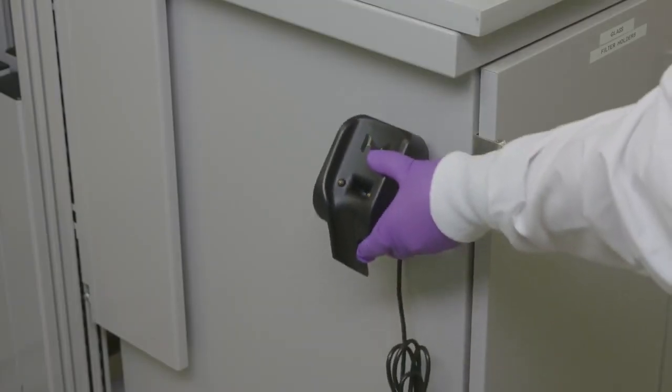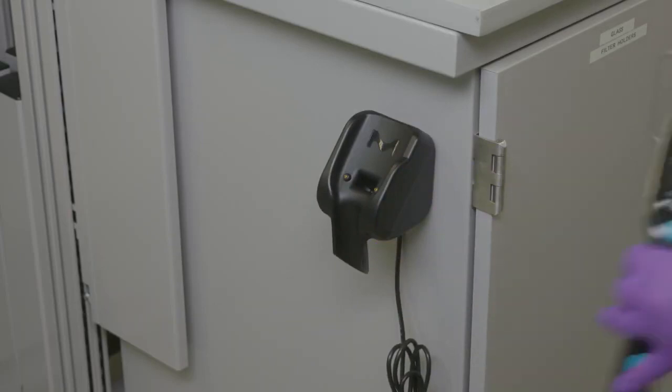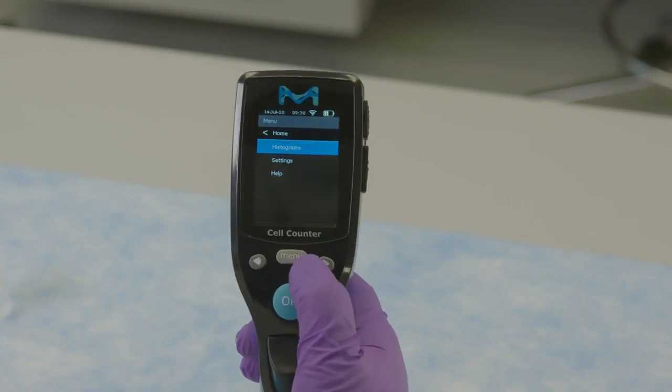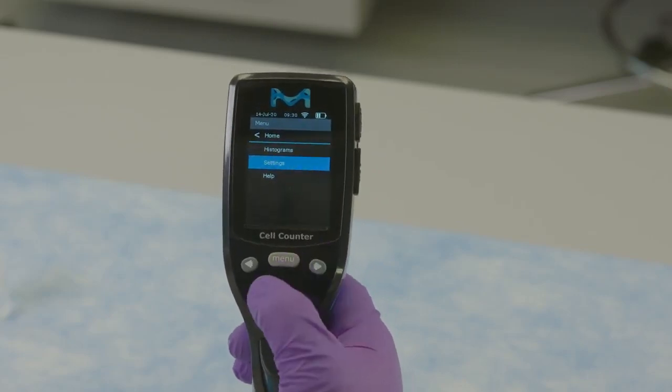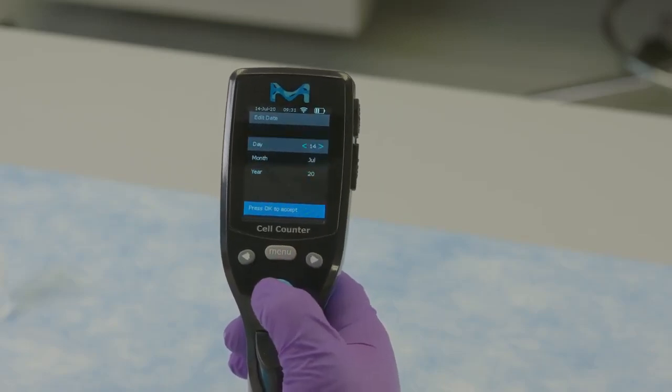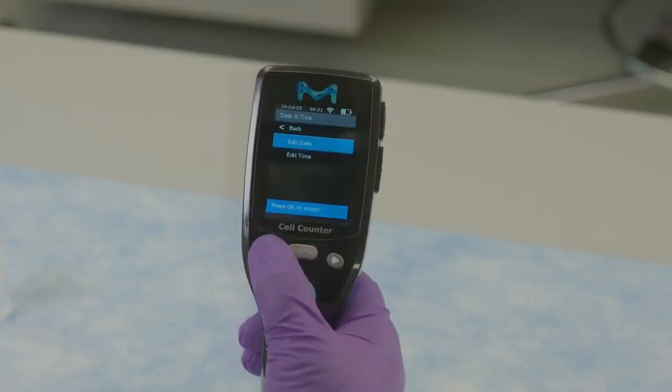If not charged, place on the charging station for up to three hours for a full charge. Set the time and date by scrolling from the main menu, arrows and OK buttons accordingly. The test files are created and named using these timestamps.